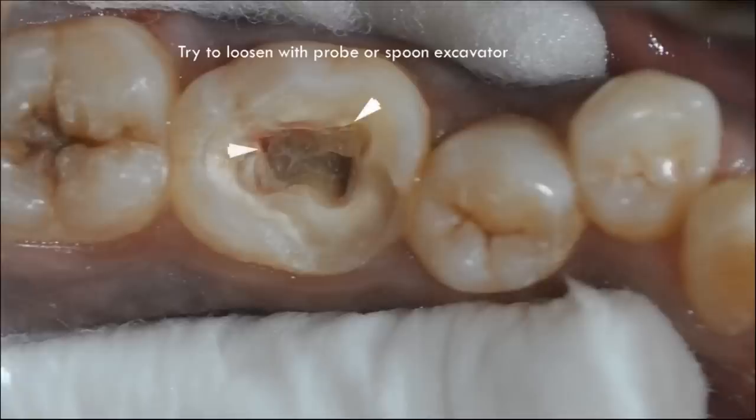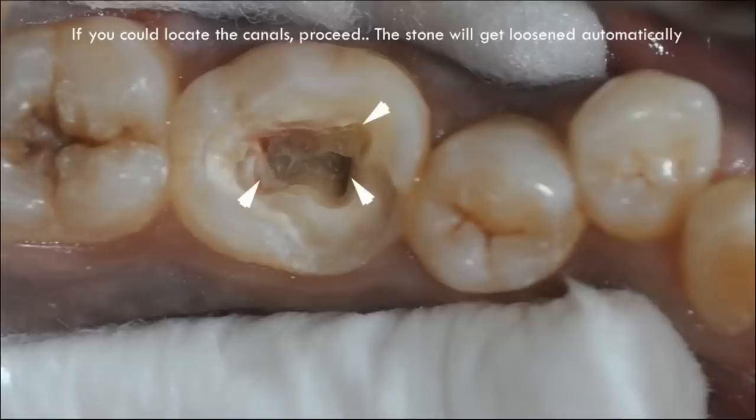The first step that we should do is to remove the roof of the pulp chamber and expose the pulp stone completely. In my experience while doing root canal treatment, most of the pulp stones can be removed easily and they will be loosely bound to the walls. The first thing that we should do is to attempt to loosen and remove the pulp stone with a probe or endodontic spoon excavator. In less than 20% of the cases, this technique will be helpful. So what to do in the remaining cases? Let the pulp stone be there. Why not we continue doing root canal treatment? Yes, it is possible.